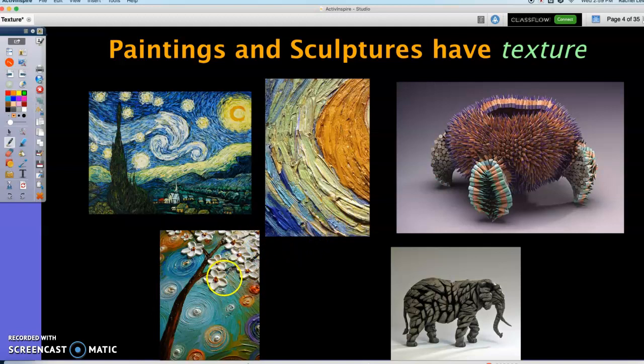Same with this painting. You can see the flowers are raised up and swirls of bumpy paint. This is a sculpture made up of pencil tips, pencil points. And we know that would feel spiky, prickly.